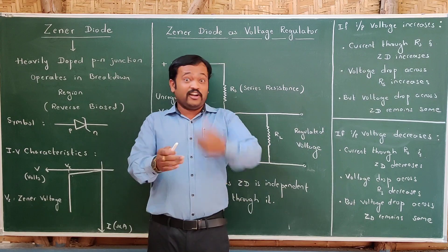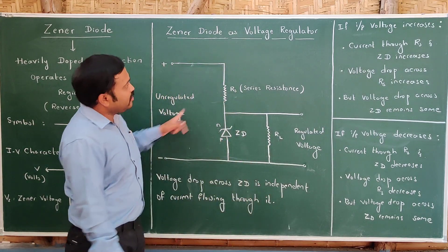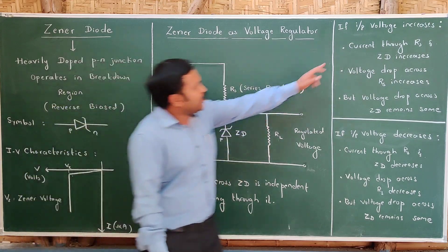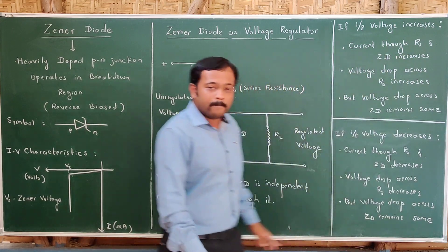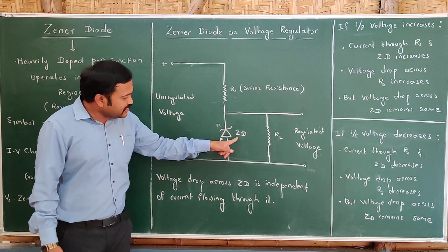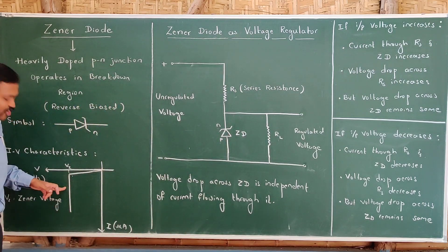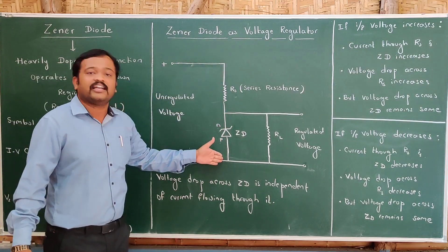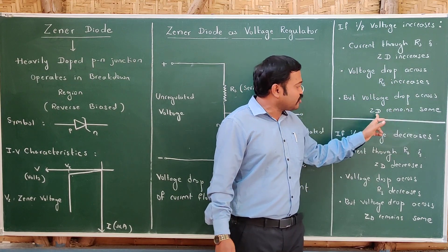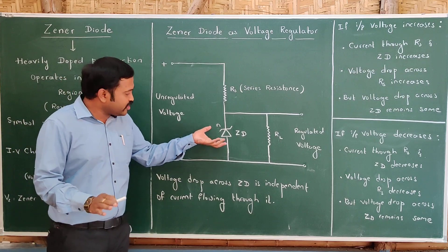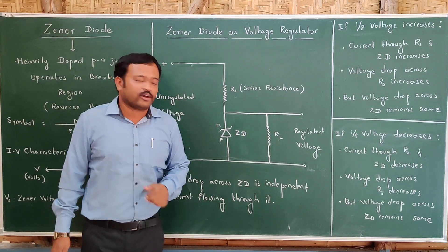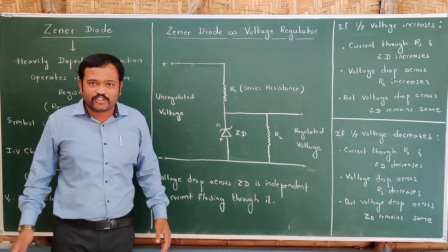If input voltage increases, the current through RS and the Zener diode increases. As voltage increases, current also increases. You would expect voltage across the Zener diode to increase as well, but the voltage across the Zener diode will not increase — because voltage across the Zener diode is independent of the current. Even though the current in the diode has increased, the voltage has not increased. The voltage across the series resistance RS increases, but the voltage drop across the Zener diode remains the same, and so the voltage across the TV will also not increase — it is safe.